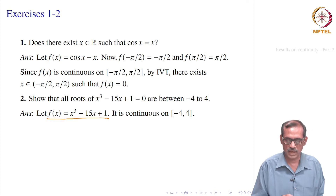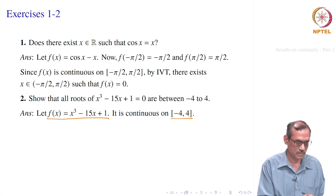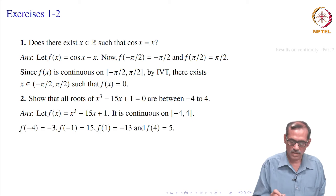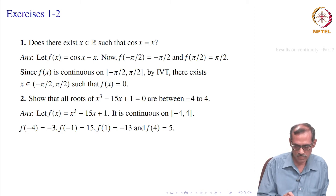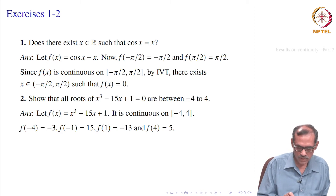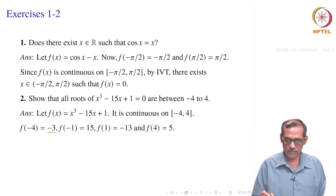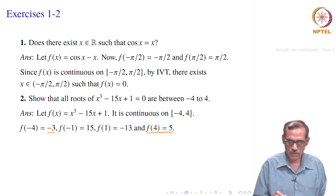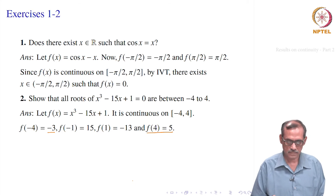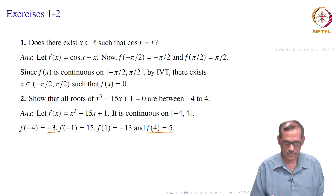Let f(x) = x³ − 15x + 1. It is continuous on [−4, 4]. We compute: f(−4) = −64 + 60 + 1 = −3, and f(4) = 64 − 60 + 1 = 5. So there is a sign change from −4 to 4, giving a root by the Intermediate Value Theorem. Now we do some guesswork to find other roots.